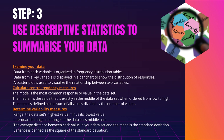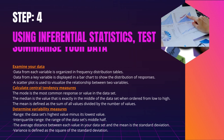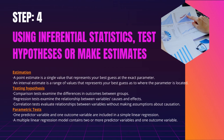3. The average distance between each value in your data set and the mean is the standard deviation. 4. Variance is defined as the square of the standard deviation. Your choice of variability statistics should be guided by the shape of the distribution and the level of measurement. For skewed distributions, the interquartile range is the best measure, while standard deviation and variance provide the most information for normal distributions.